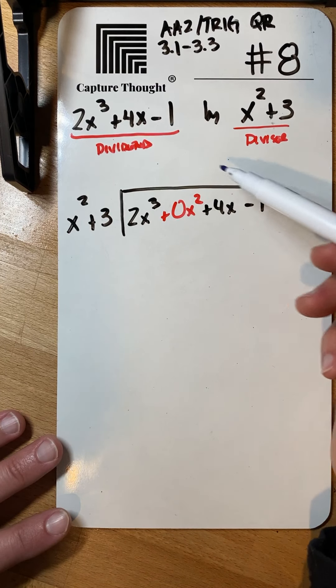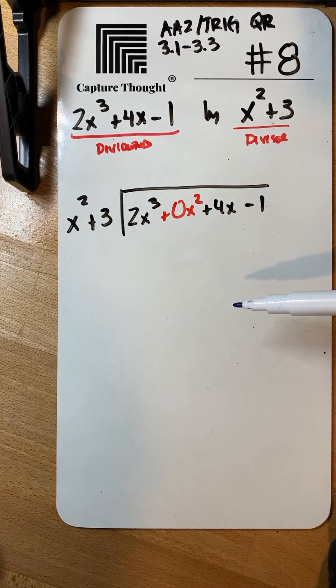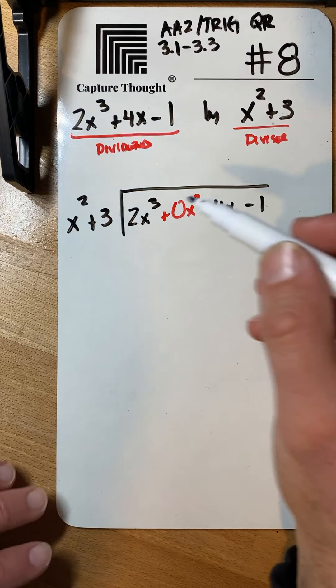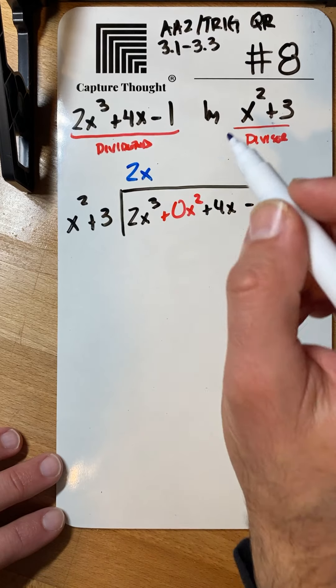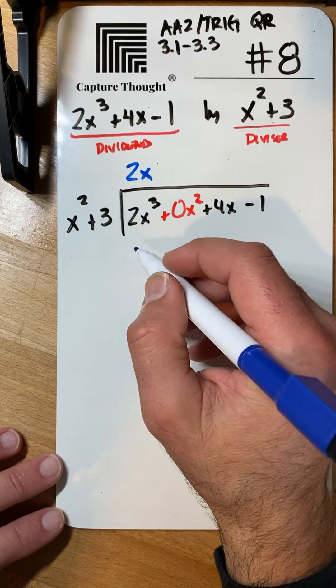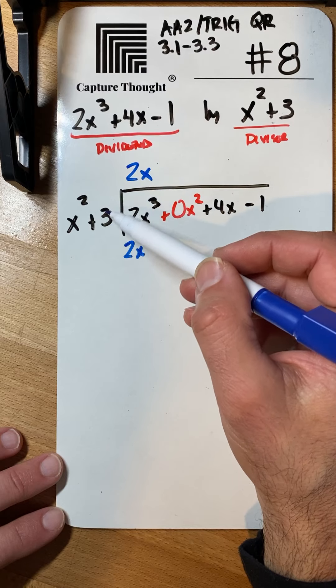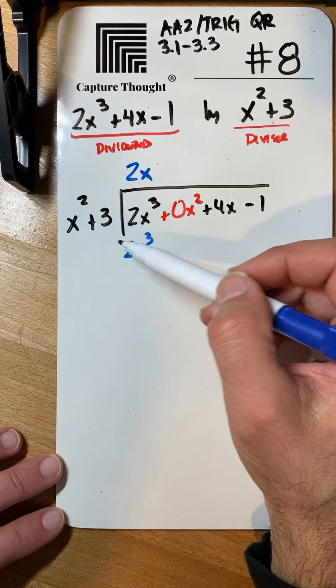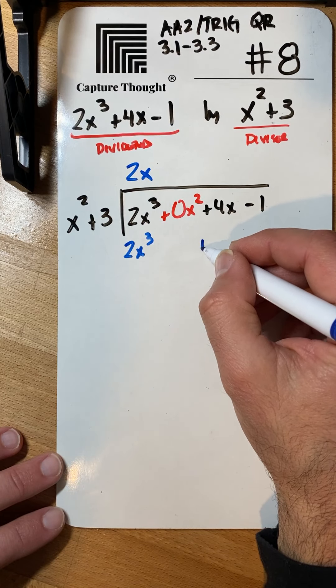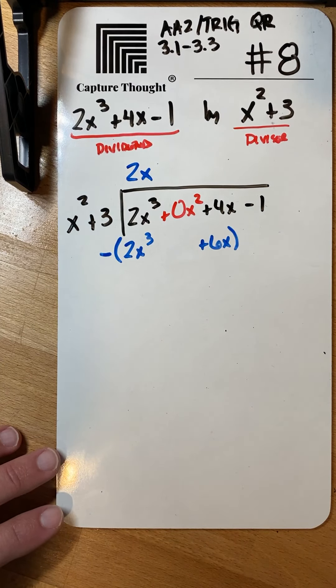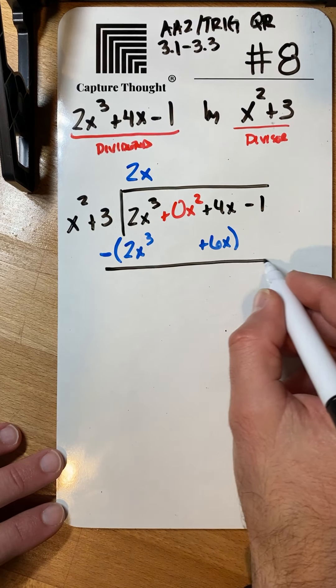And then this process, this long procedure is really all it is. It's just a procedure. So x squared times what gives you two x cubed? So I think the answer would be two x because two x times x squared is two x to the third. And now you go two x times three, that's six x. Where do I put that? I put that over here. It's a positive six x.